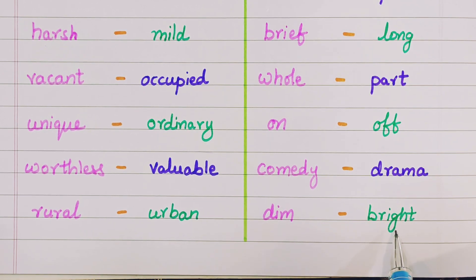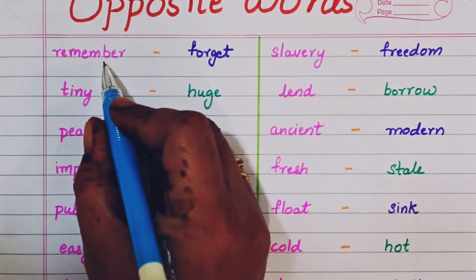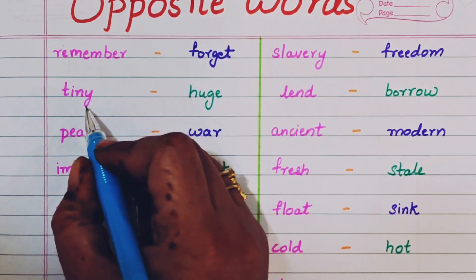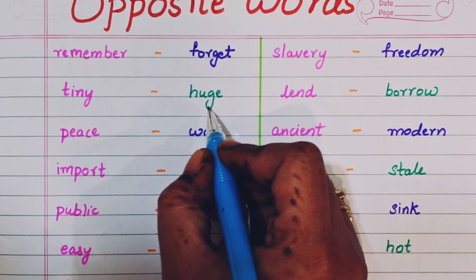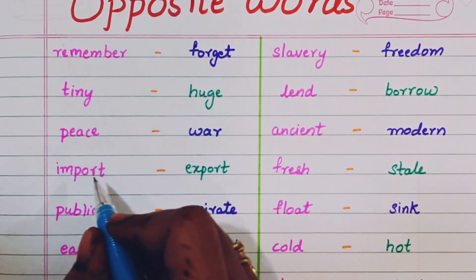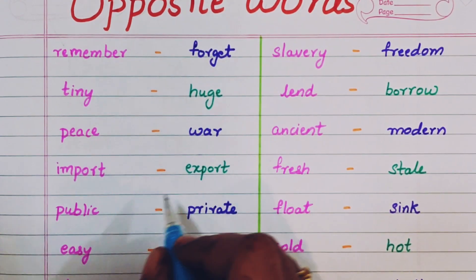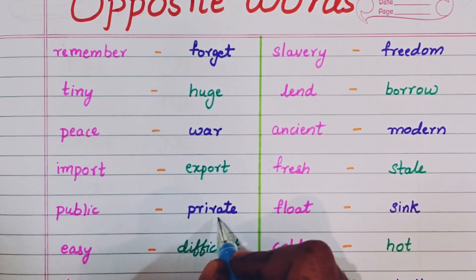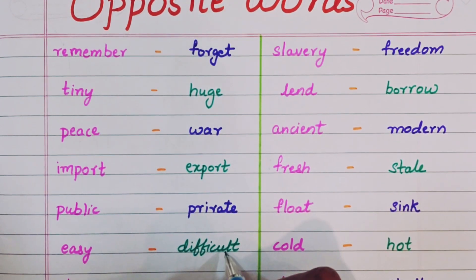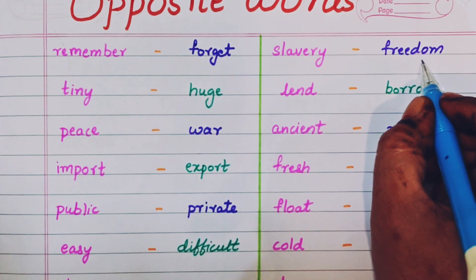Dim, bright. Remember, forget. Tiny, huge. Peace, war. Import, export. Public, private. Easy, difficult. Slavery, freedom.